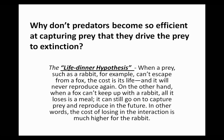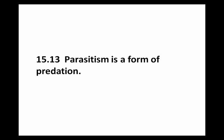We may ask the question: why don't predators become so efficient at capturing prey that they drive prey to extinction? The answer is the life-as-dinner hypothesis. When a prey such as a rabbit can't escape from a fox, the cost is its life — it will never reproduce again. On the other hand, when a fox can't keep up with a rabbit, all it loses is a meal — it can still go on to capture other prey and reproduce. The cost of losing the interaction is much higher for the rabbit, and if you lose your life and can't pass on your genes to offspring, that's a very costly outcome.